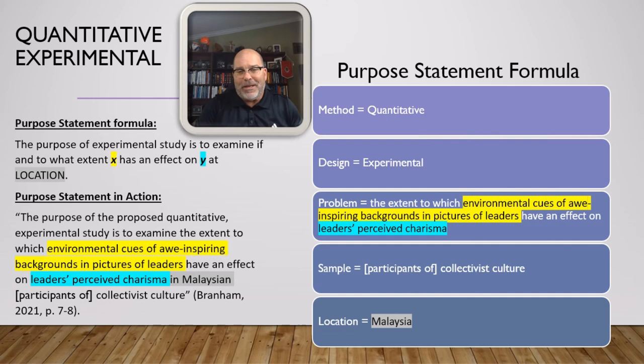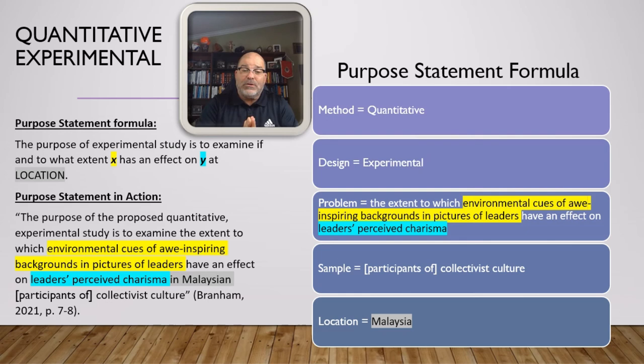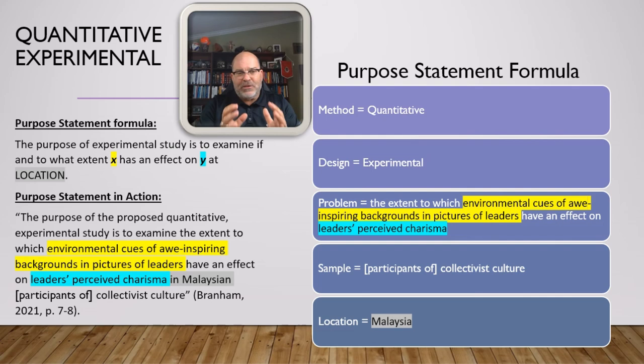At this point you could probably complete this slide yourself, because you've seen this pattern twice already. Once again, method plus design plus problem plus sample plus location equals the purpose statement: the purpose of this experimental study is to examine if and to what extent X has an effect on Y at the location. In the real world: the purpose of the proposed quantitative experimental study is to examine the extent to which environmental cues of awe-inspiring backgrounds and pictures of leaders have an effect on leaders' perceived charisma in Malaysian collectivist culture. A bit more complex, but it still follows the exact same pattern.